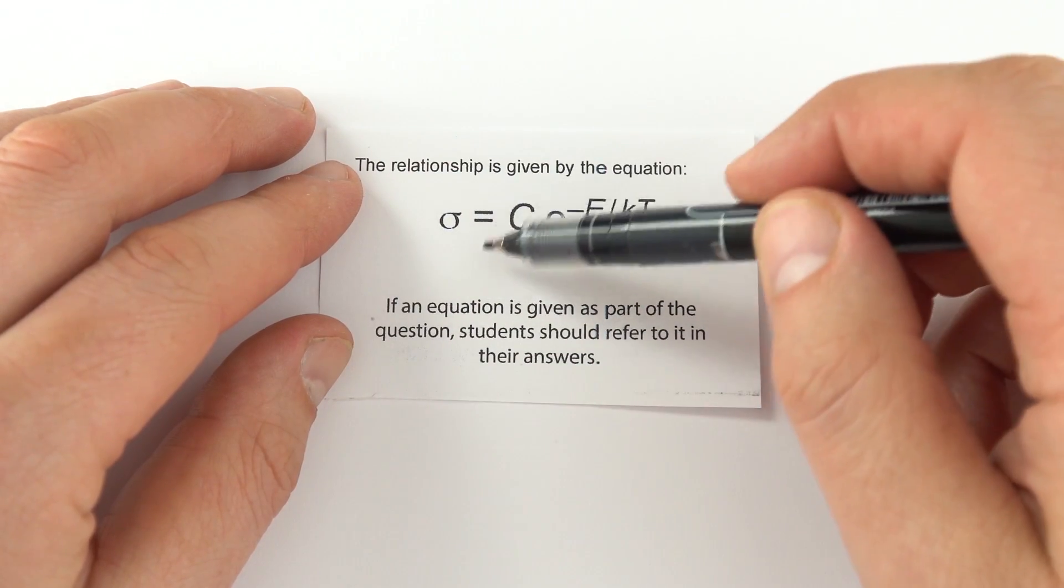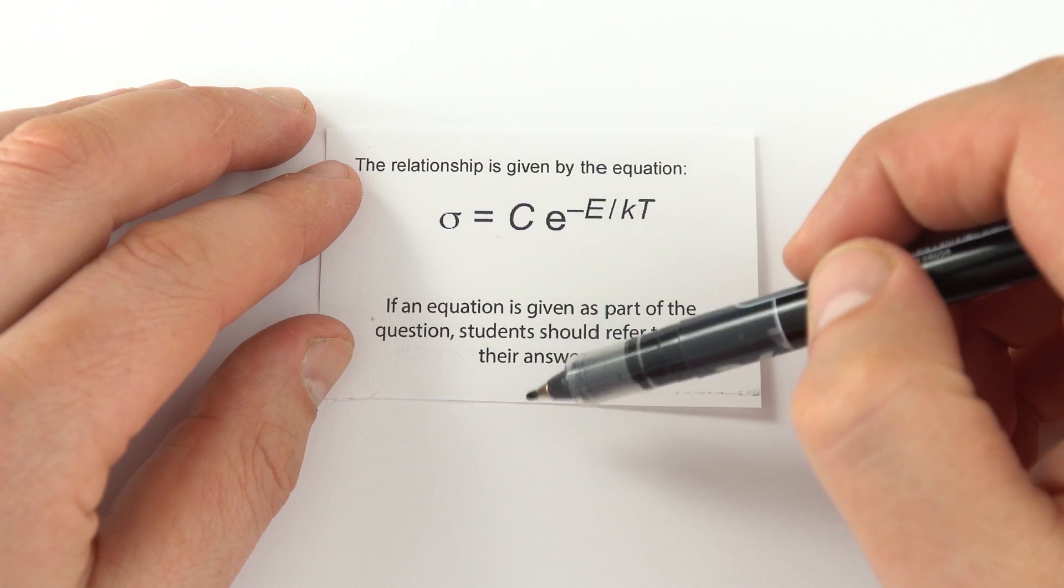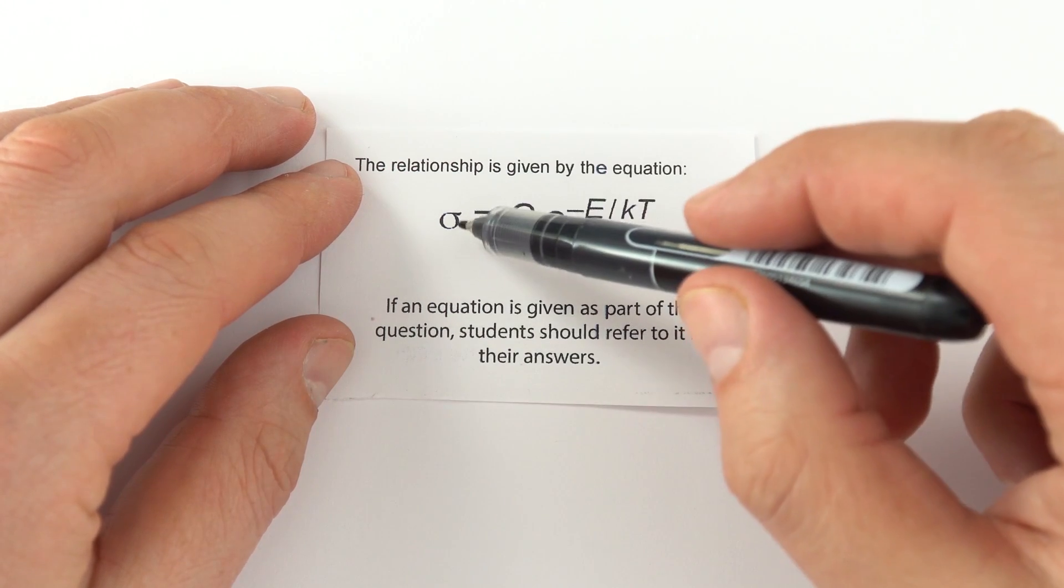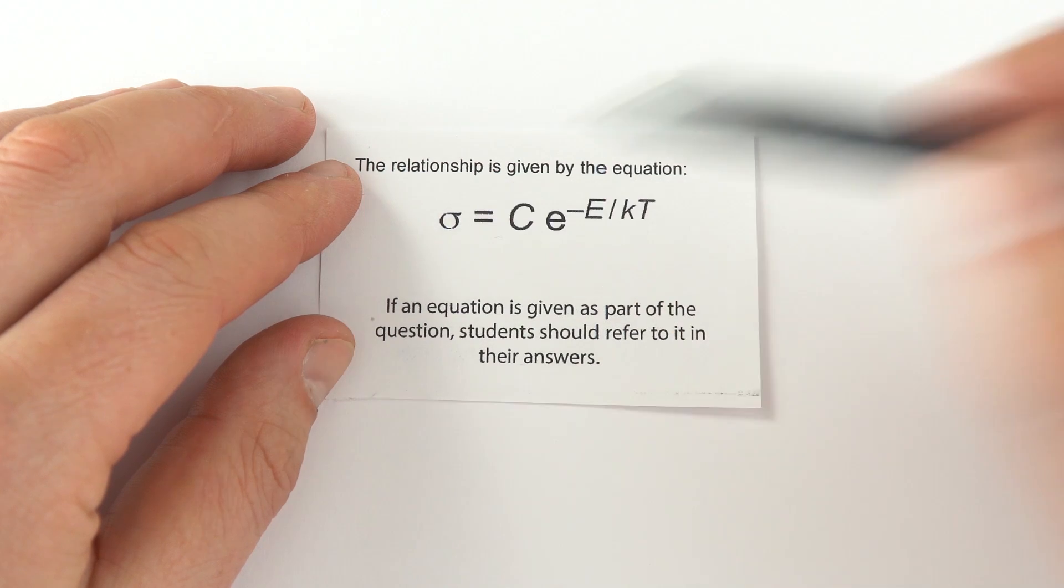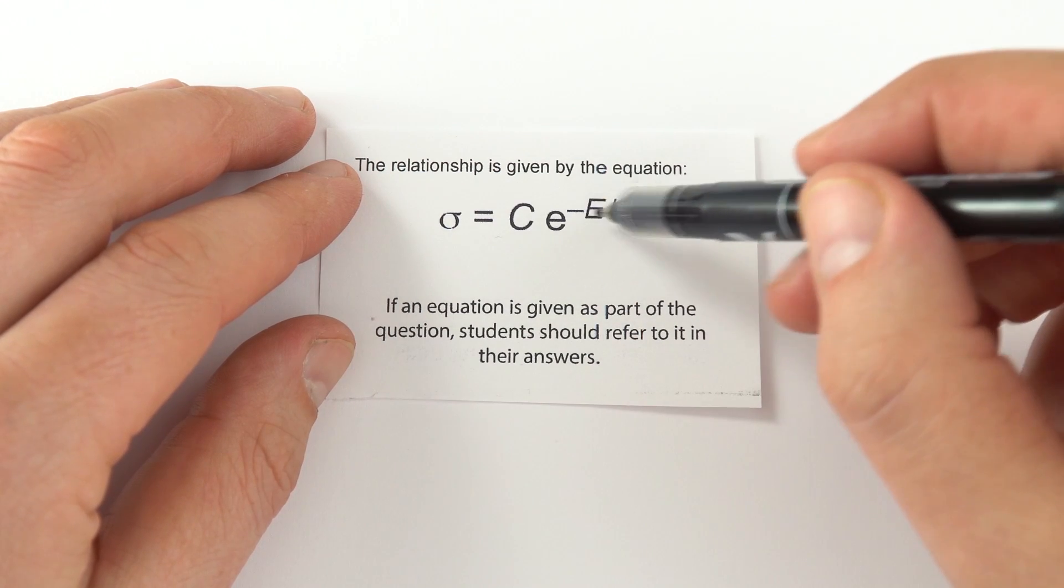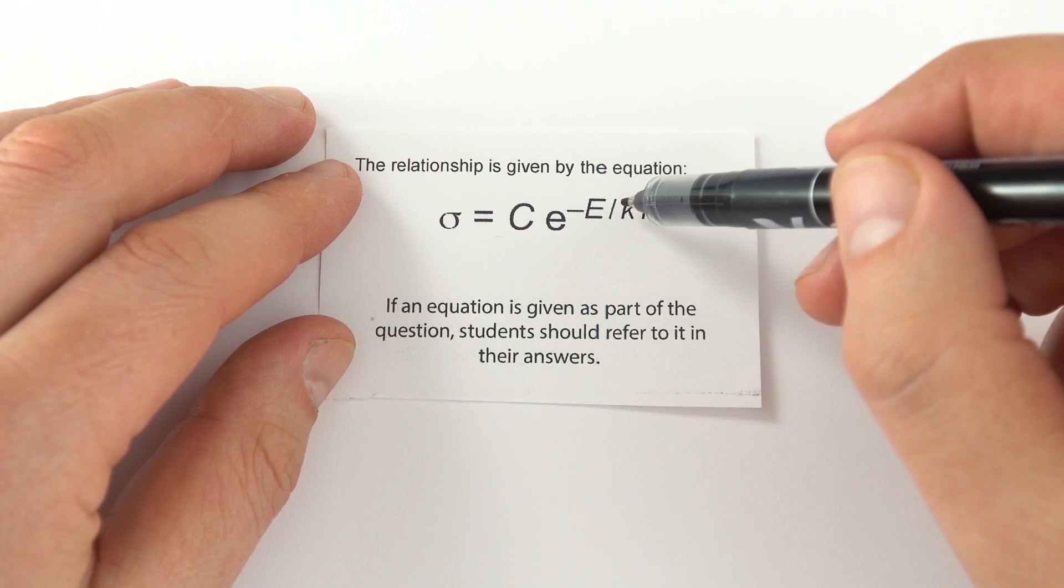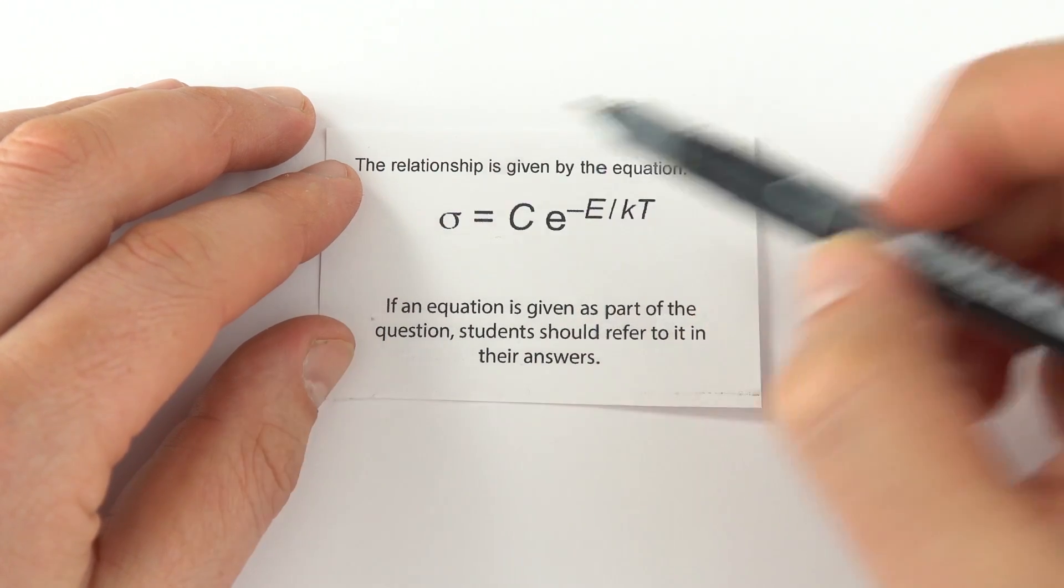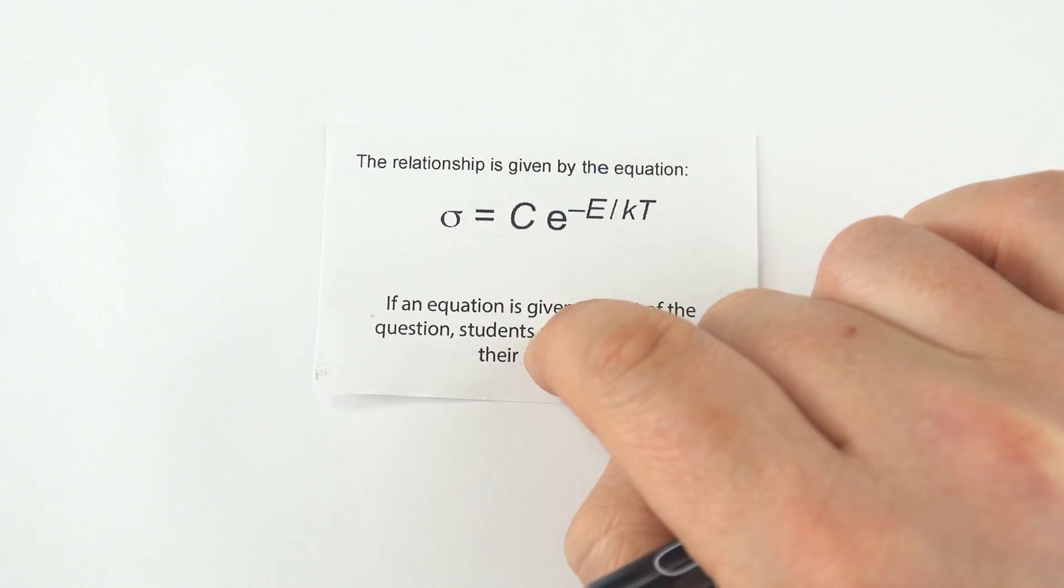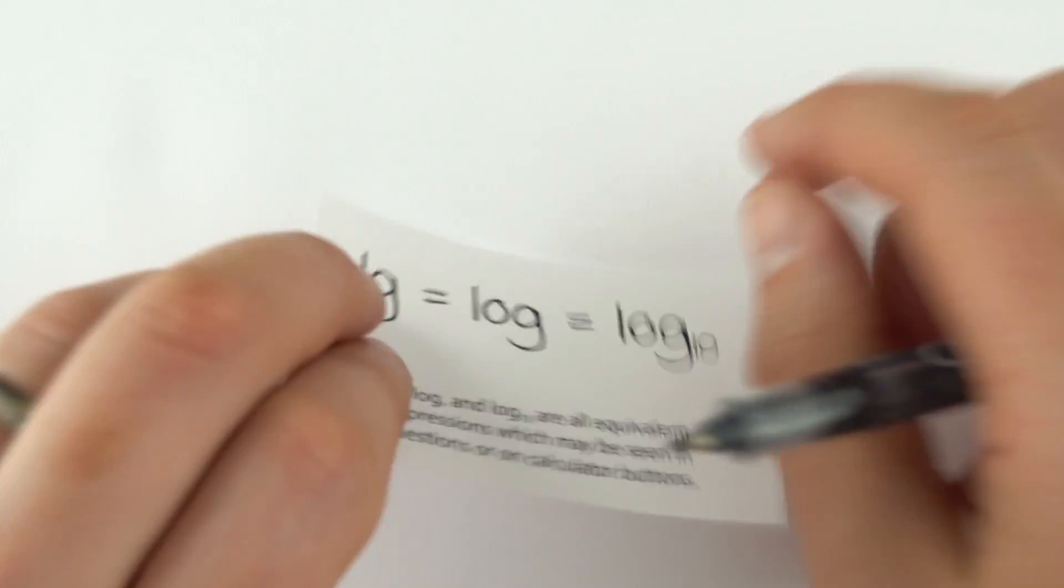Sometimes you might get a weird kind of thing given to you in a question. You might not know what any of this means. It doesn't matter because it will explain it somewhere in the question. If you get an unfamiliar equation, then maybe you should refer to it in your answer. So what happens as k increases to the value of sigma? If you refer to the equation, so as k gets bigger, e to the minus that thing then gets smaller, and therefore that's going to then affect things in a certain way. If it's an unfamiliar equation given to you, refer back to it in your answers.